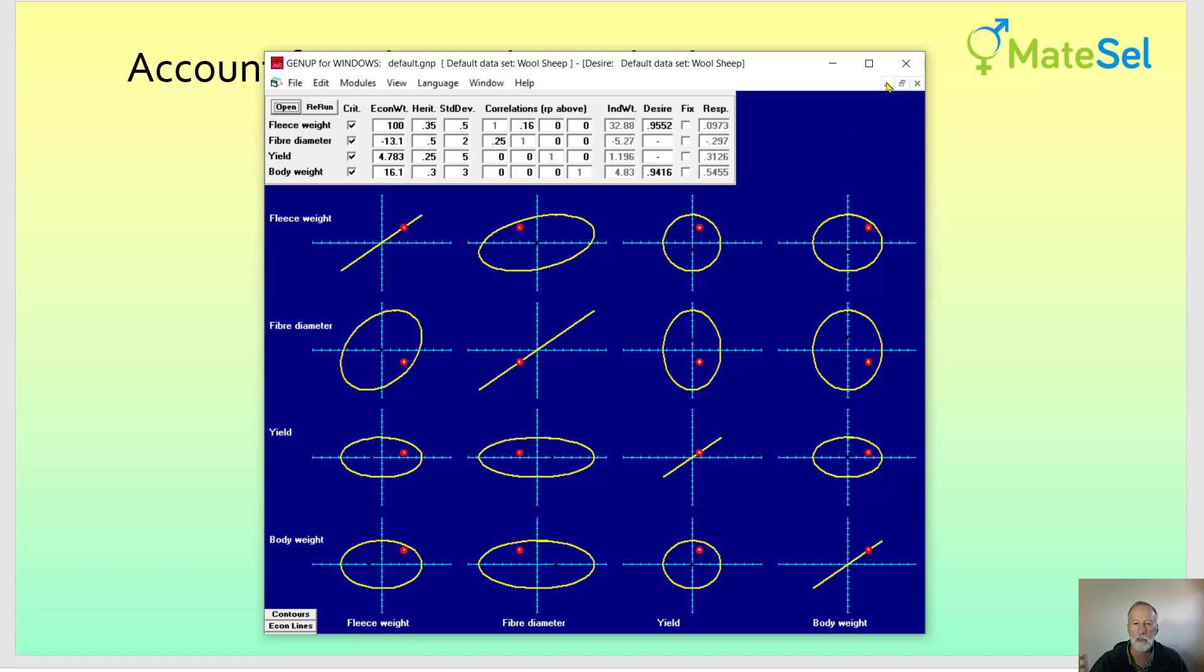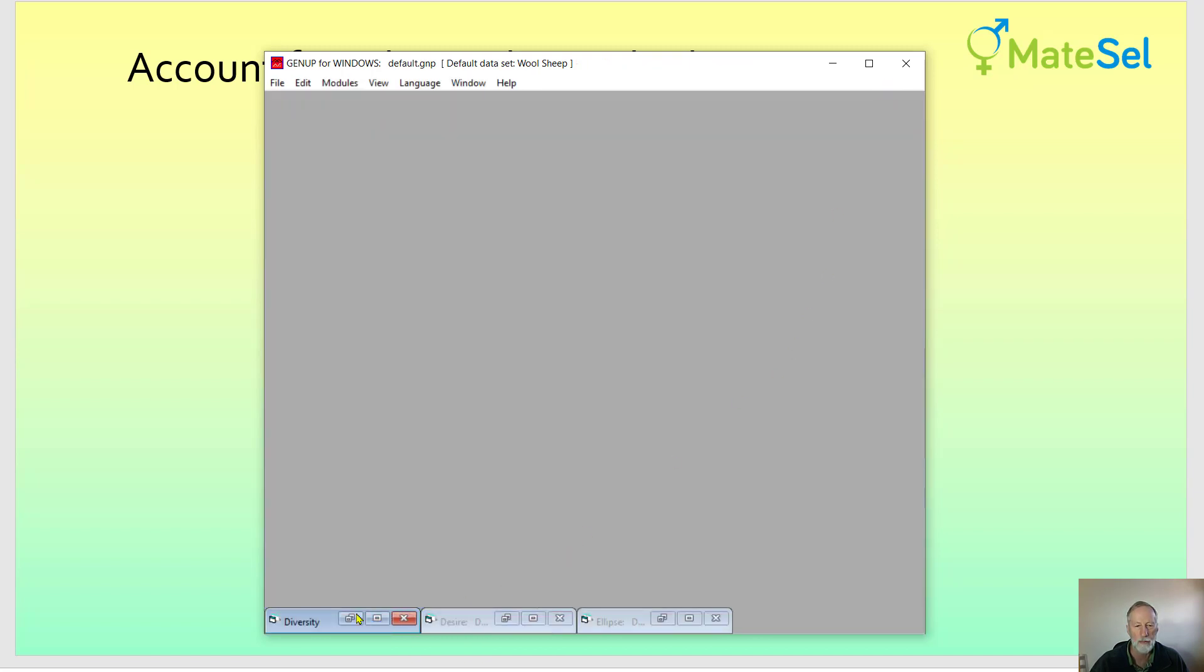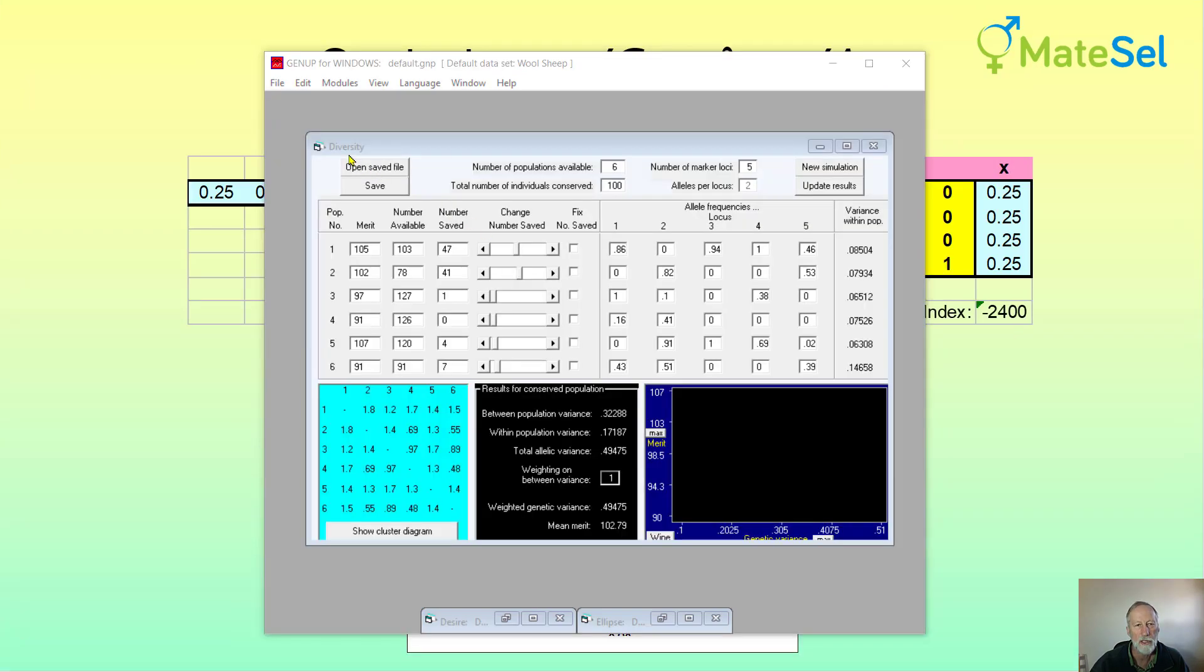And lastly we'll go and look at another type of frontier here. So this module diversity which is part of GenUp that you can download on the internet is a little bit similar to MateSel in that it's balancing genetic variance or genetic diversity with merit but in this setting we're looking at a conservation program where we're looking at how to manage different populations and how much emphasis to put on each of them.